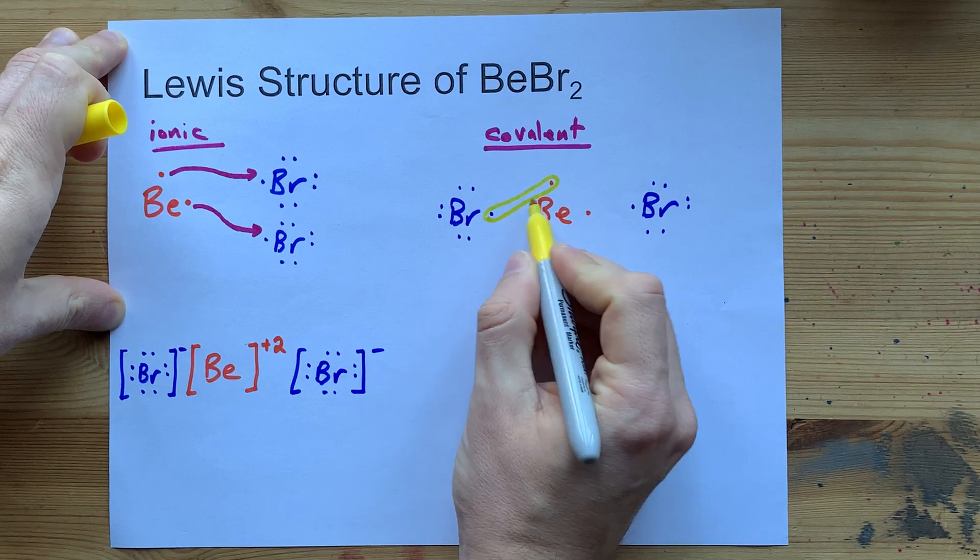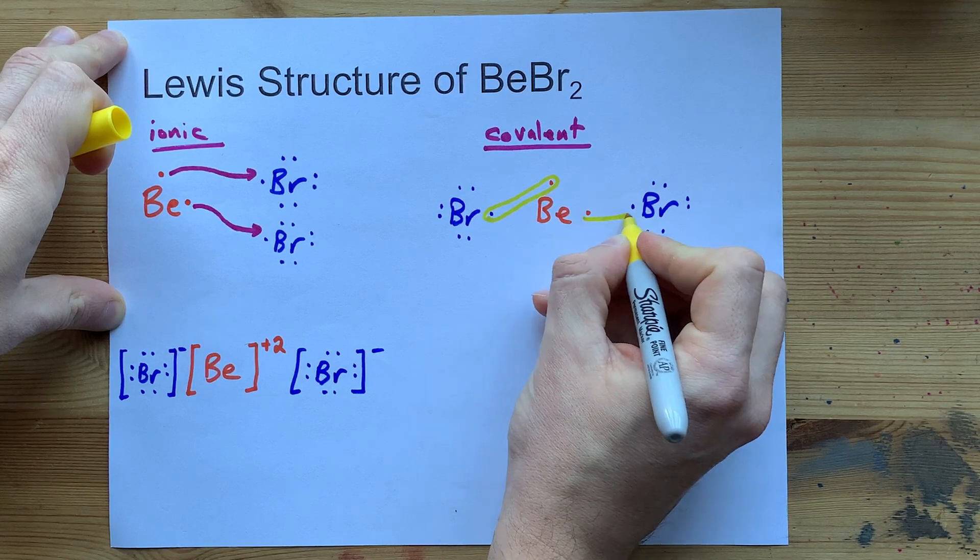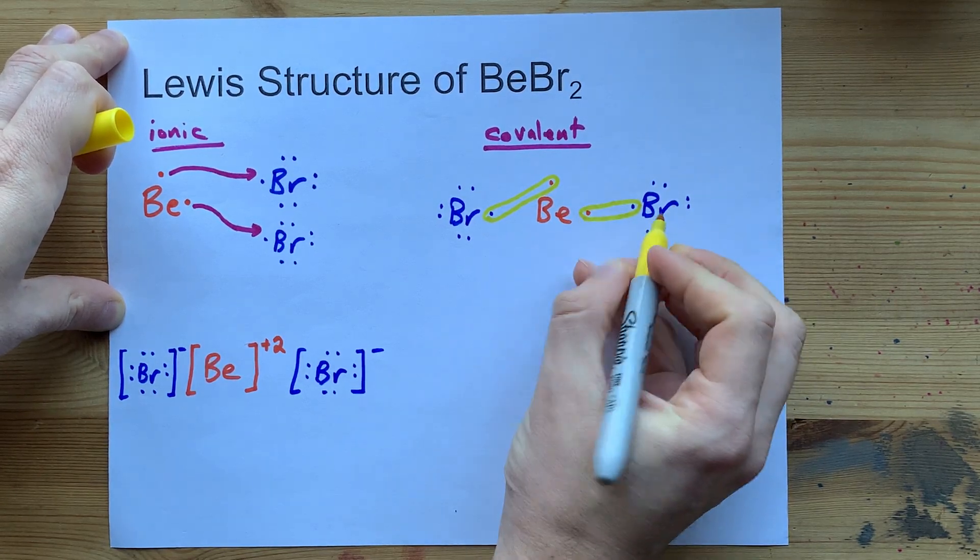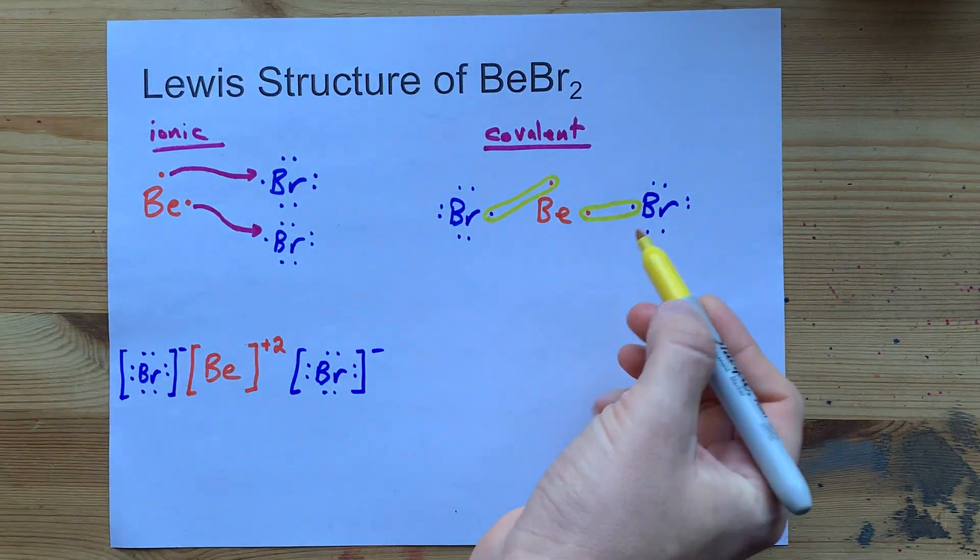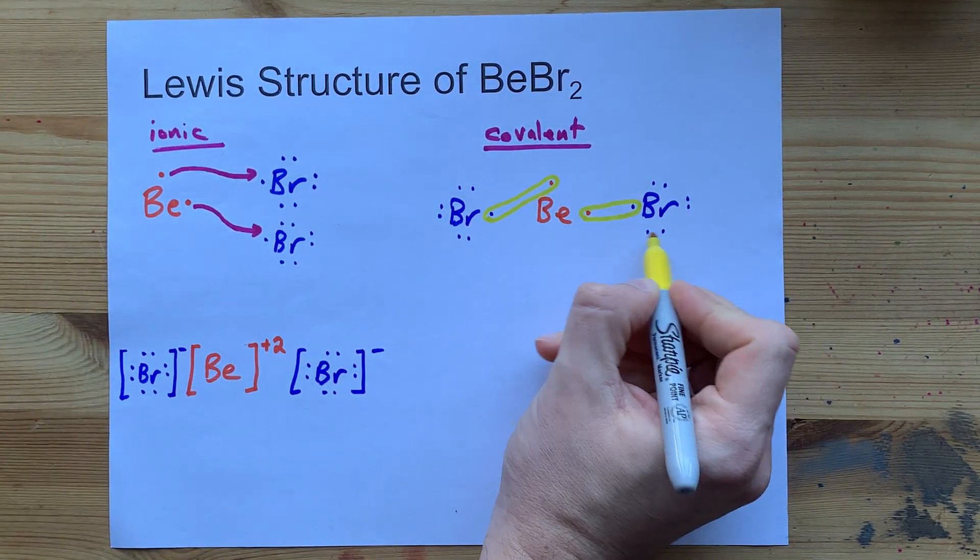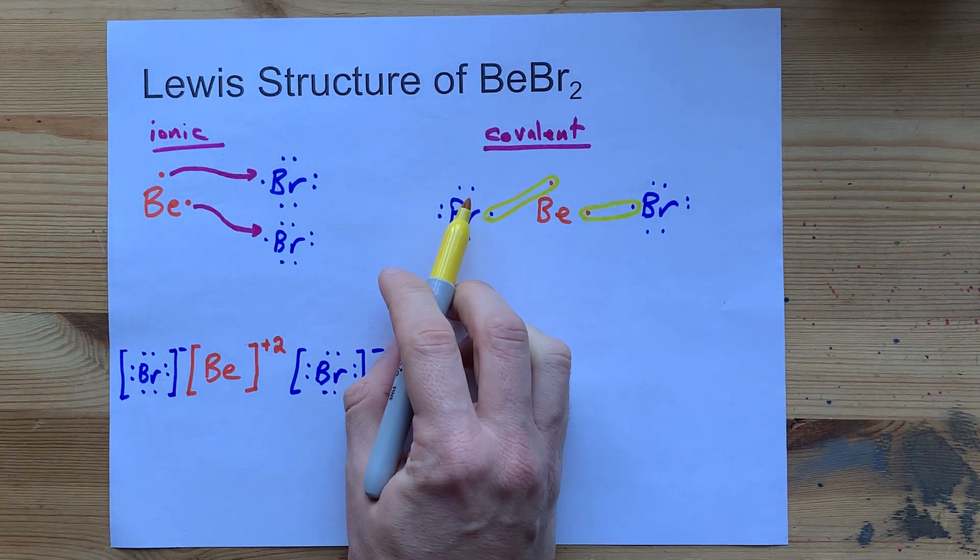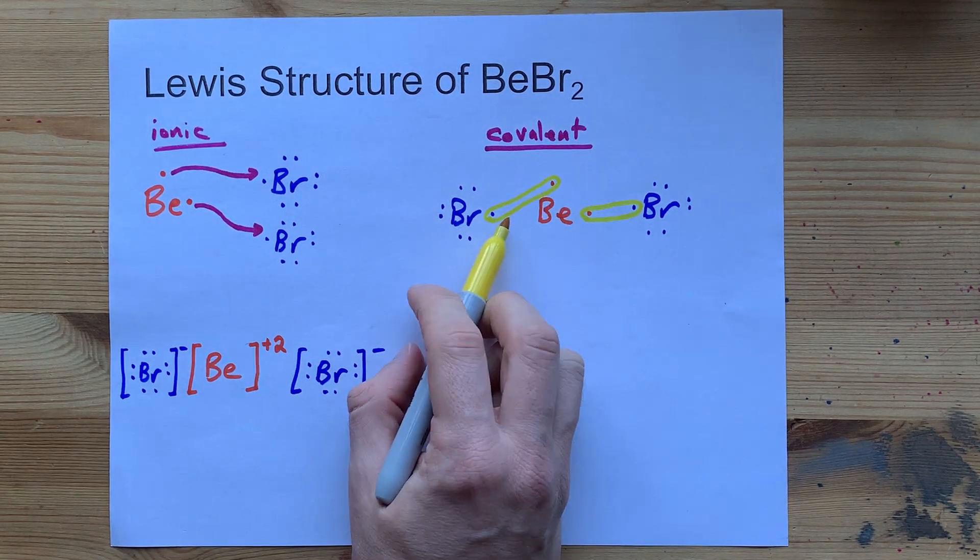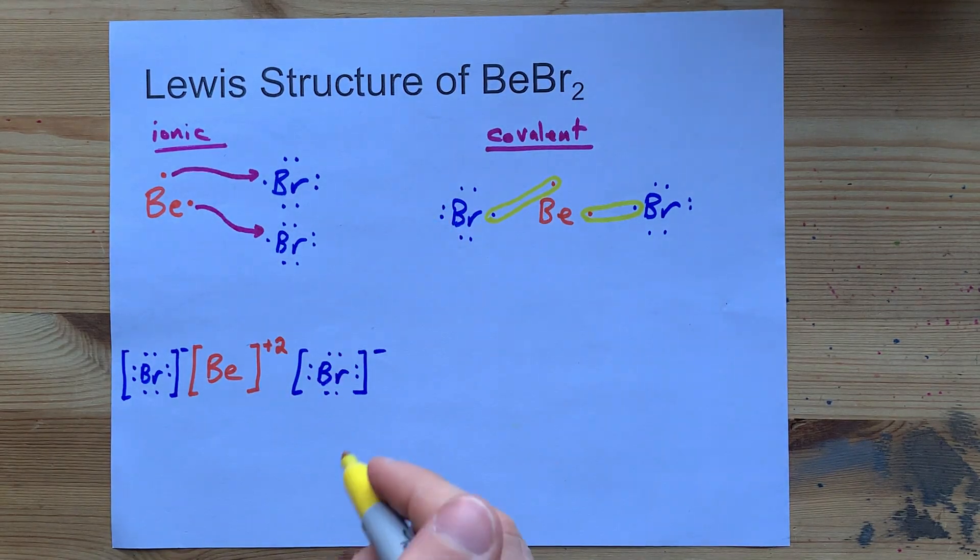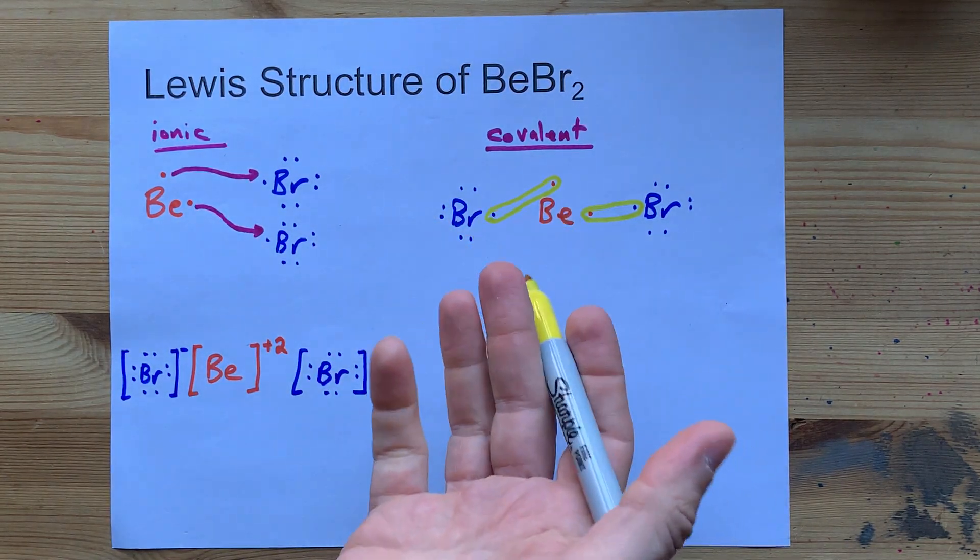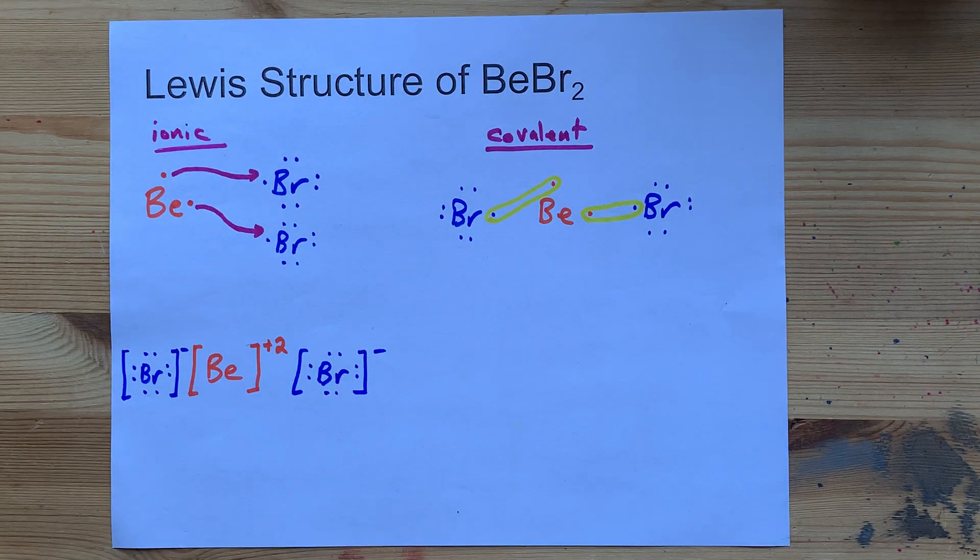And what ends up happening is this electron from bromine and this unpaired electron from beryllium pair up to make a bonding pair of electrons that is shared between the two atoms. The same thing happens with these two electrons. So, bromine can pretend that it has eight valence electrons and that it satisfies the octet rule. The seven that it started with plus this one that beryllium is sharing with it. Same for this bromine. Seven plus the one being shared with it. Beryllium can pretend that it has four electrons in its outer shell, and beryllium actually follows, like it's an exception to the octet rule, where it's happy with just four in its outer shell.